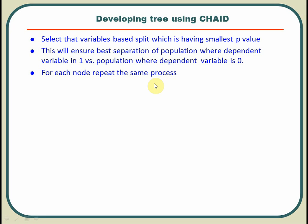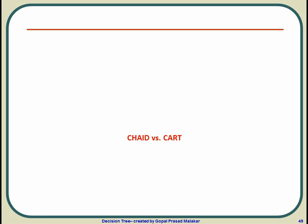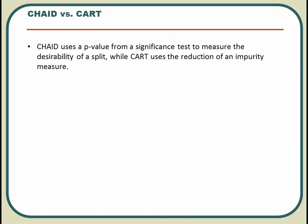What is the difference between CHAID and CART? CHAID uses the p-value from significance testing to measure the desirability of a split, whereas CART uses the reduction of impurity. In CART we were going for the Gini index of a split — the smallest Gini index means the smallest impurity — so CART uses smallest impurity, whereas CHAID uses the p-value.